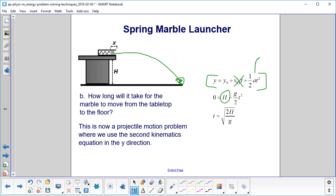With one-half at², where a equals negative g, we solve for time: the square root of 2h over g.